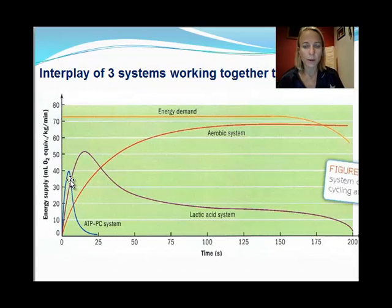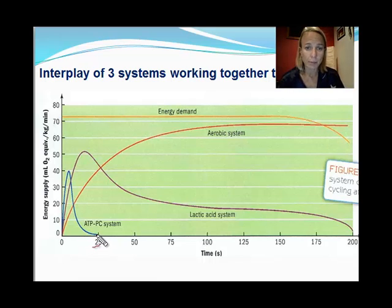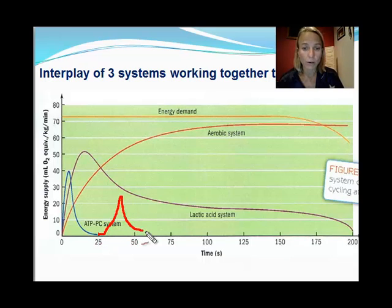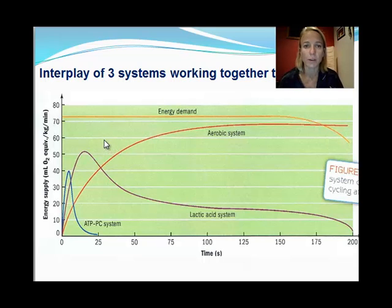Going back to the graph: for the ATP-CP system, when the PC runs out — and we only have enough PC stored in our muscles for about 10 to 20 seconds of work — once depleted, we cannot use that system until PC has a chance to replenish, after which we can reactivate it and obtain ATP using it again. So this is an important graph: all three energy systems contribute, but which one is dominant depends on intensity, duration, and the availability of oxygen and fuel.